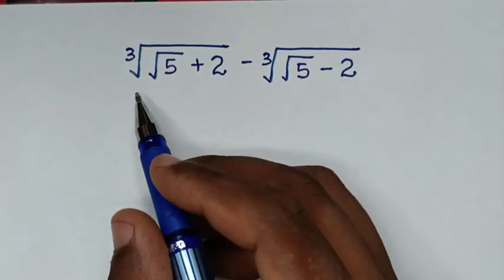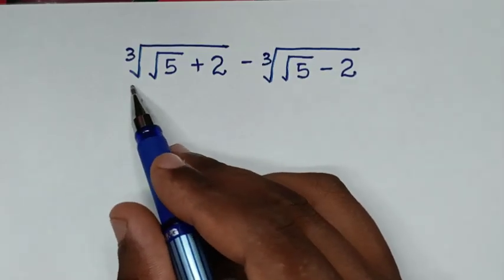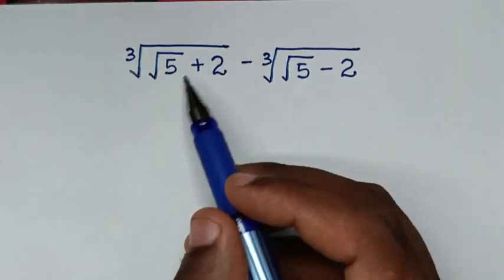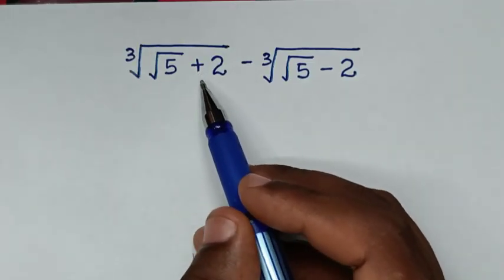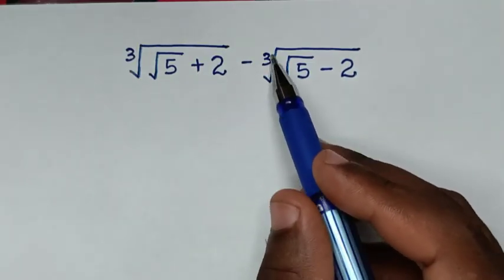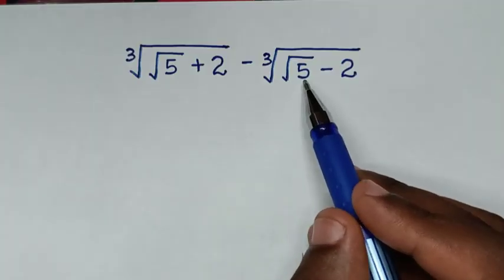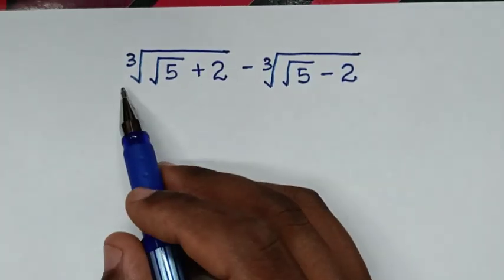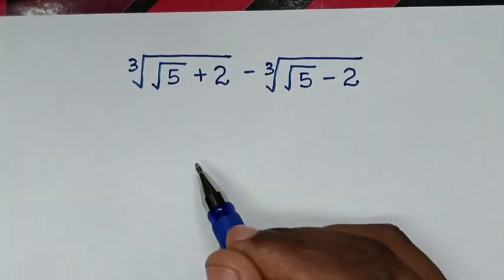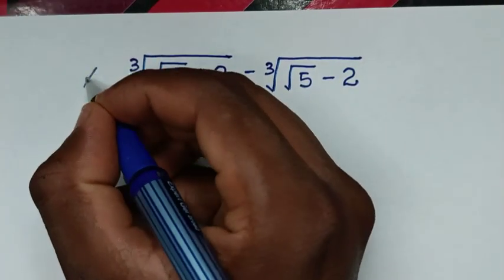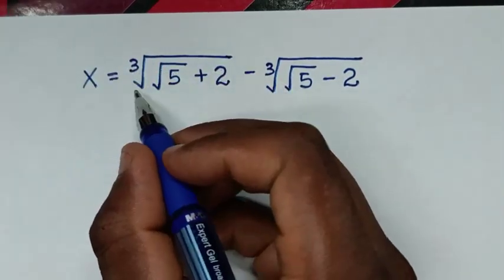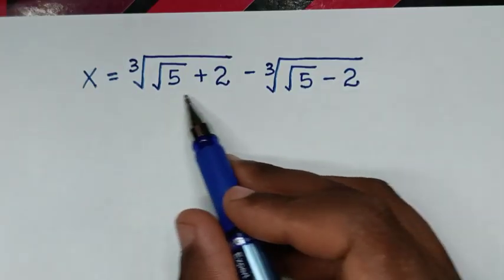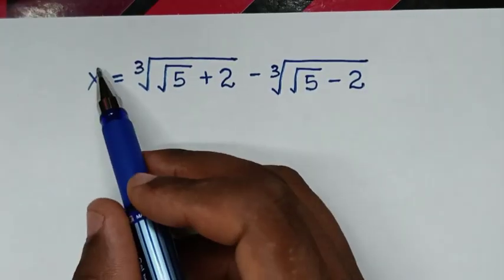Welcome. We are going to solve this math problem by simplifying the cube root of (square root of 5 plus 2) minus the cube root of (square root of 5 minus 2). In the first step, we let this whole expression equal x, so x is equal to this expression, and we'll simplify it to find the value of x.